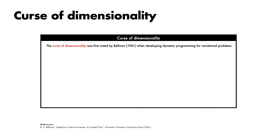Next, we turn to the hubness phenomenon. An important piece of background context when working with high-dimensional embeddings is the notorious curse of dimensionality, a term coined by Richard Bellman in 1961 in his work developing dynamic programming techniques for tackling variational problems. He observed that while dynamic programming is a powerful tool with broad applicability, it still fails in the face of many problems, thanks to the fact that the volume of mathematical spaces grows very rapidly — i.e., exponentially — as their dimensionality increases.